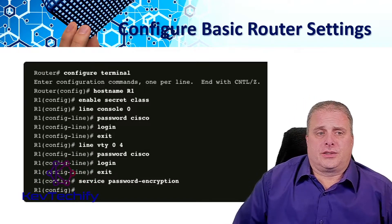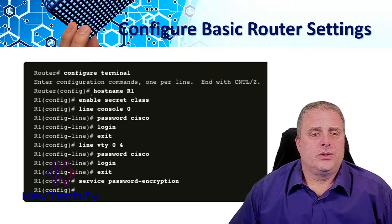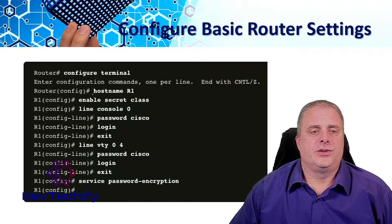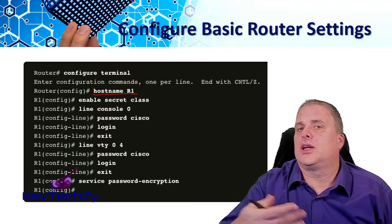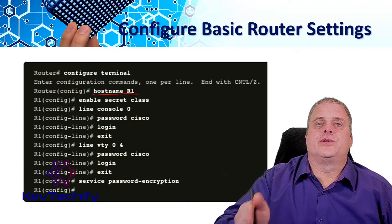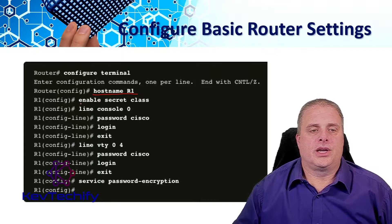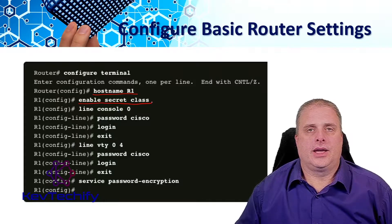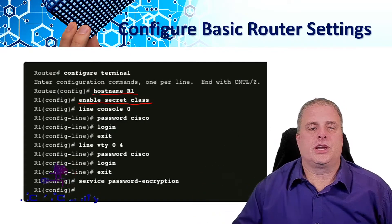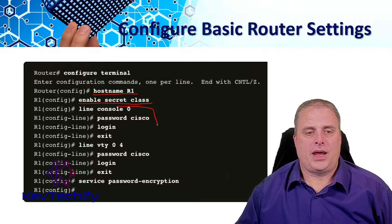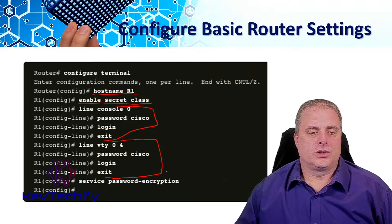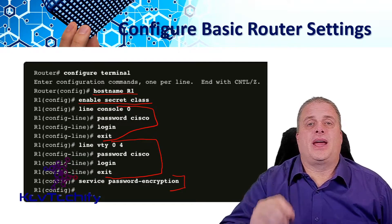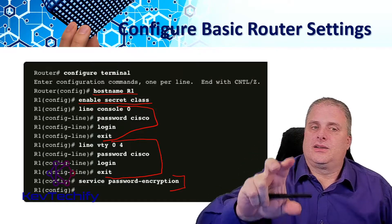Here we have some basic router settings. The first thing we do is set our hostname. Especially if you're using SSH, you have to have a unique hostname, and it helps you identify which device you're in when telnetting into lots of devices. We set our enable password to go from user exec mode into privilege exec mode. Then we configure our console ports with a password and tell it to use that for the login process. We set up our virtual terminals, tell it to use that for login, and set up password encryption for all plain text passwords in our configuration.